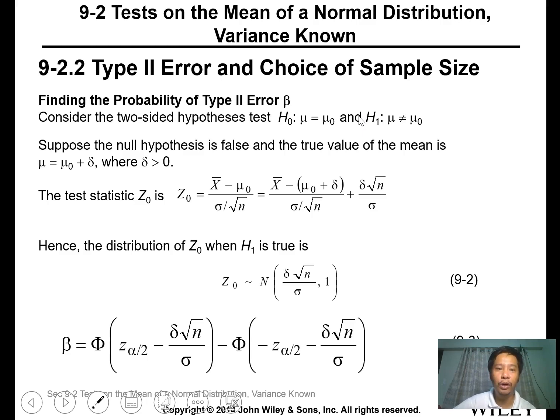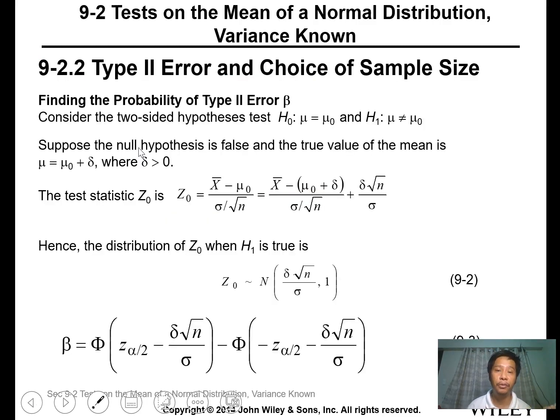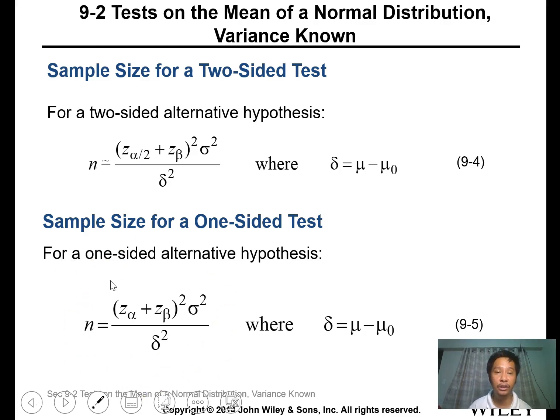Suppose that the null hypothesis is false and the true value of the mean is mu plus delta. The delta is the difference between the actual mean value and your calculated mu value. The test statistic using Z test gets the probability between your Z value with the plus negative delta square root n over sigma. For two-sided alternative, you can use this formula to determine the sample size. For one-sided, you use alpha instead of alpha over 2.